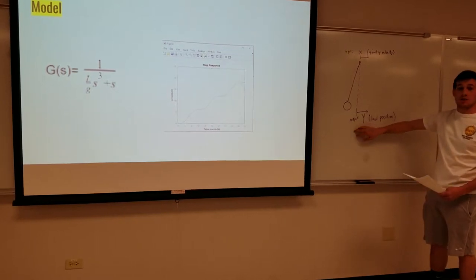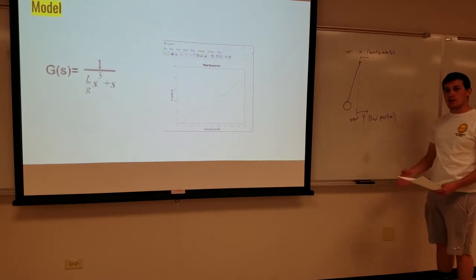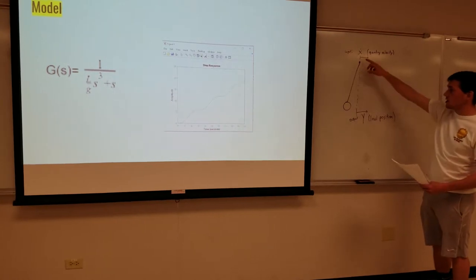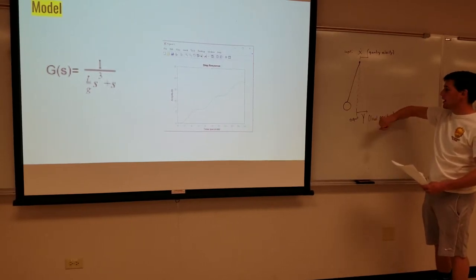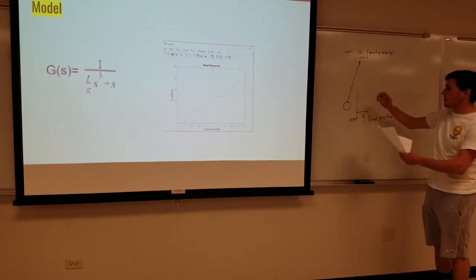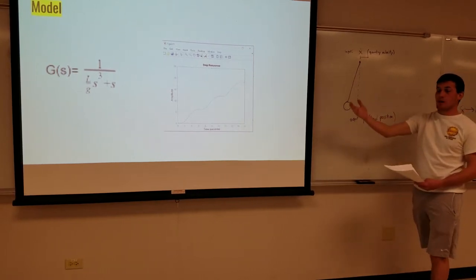The output is the load position. So it's measured in the same direction as the gantry velocity. But you can see it's dangling below the gantry. And from this physical model we were able to arrive at this transfer function.